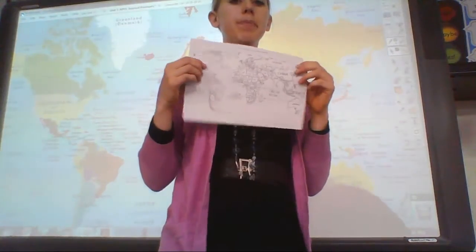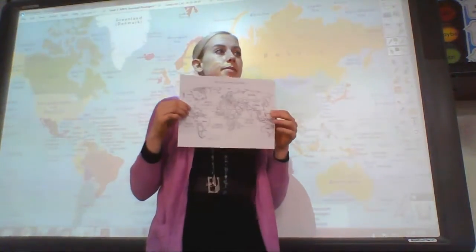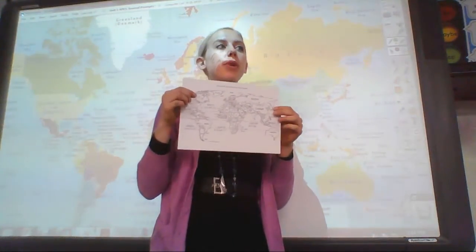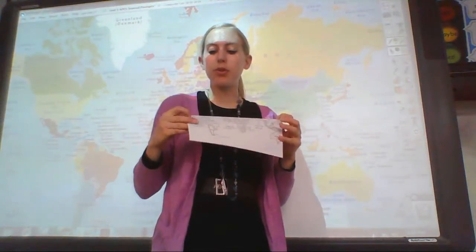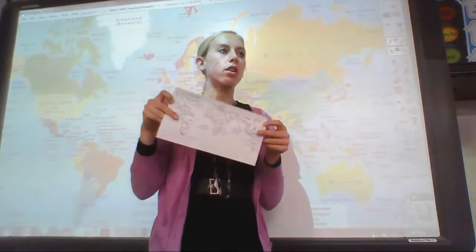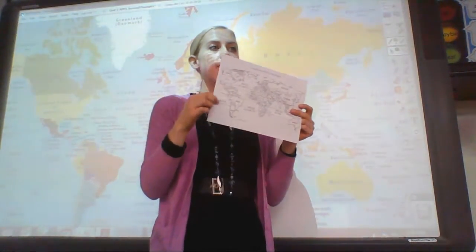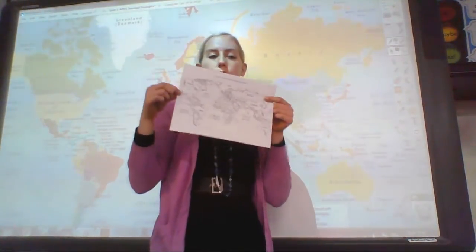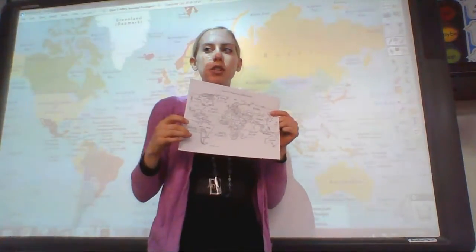What about the deserts? Right, so they're located around the Tropic of Cancer and the Tropic of Capricorn. Those are those other two lines on your map, right? So these are at 30 degrees north and 30 degrees south. So on your map, I would label zero degrees for the equator, that middle line, 30 degrees north, and 30 degrees south.